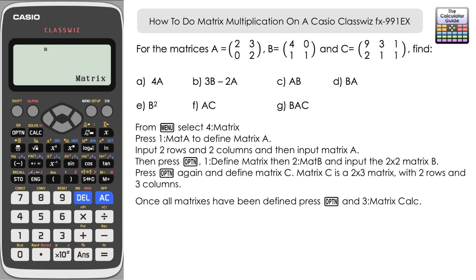So part A, we need to find 4A. So input 4, and it's option, and then to recall matrix A, it's 3. So 4 lots of matrix A, and here we have our answer, 8, 12, 0, 8.